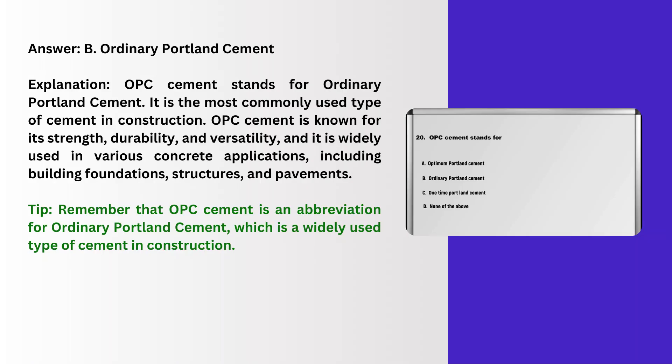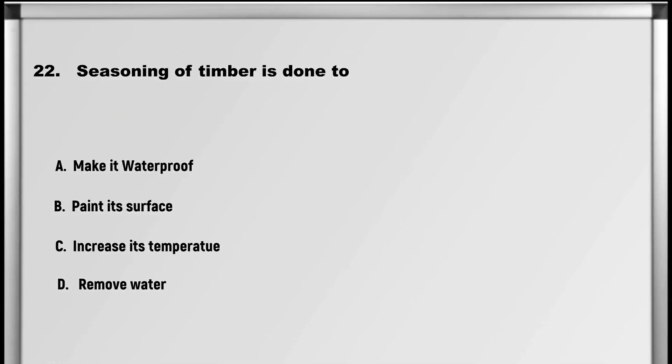Explanation: OPC cement stands for Ordinary Portland Cement. It is the most commonly used type of cement in construction. OPC cement is known for its strength, durability, and versatility, and it is widely used in various concrete applications, including building foundations, structures, and pavements. Tip: remember that OPC cement is an abbreviation for Ordinary Portland Cement, which is a widely used type of cement in construction.